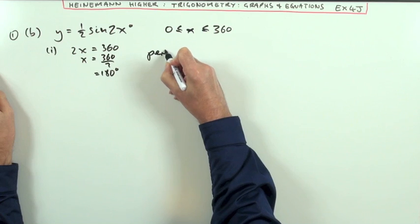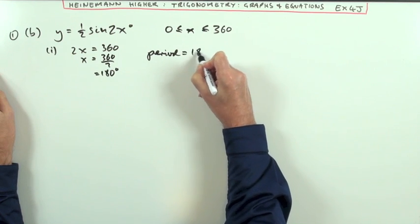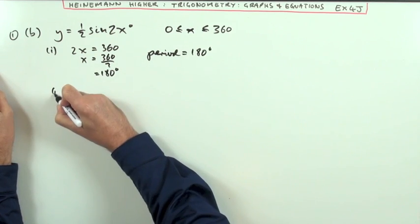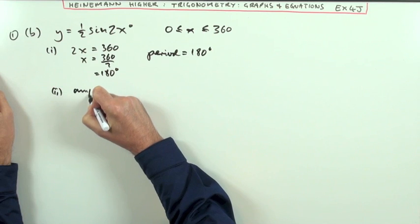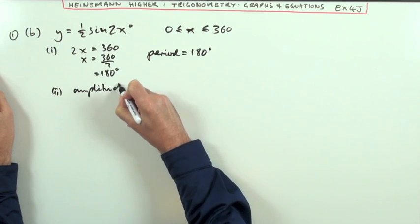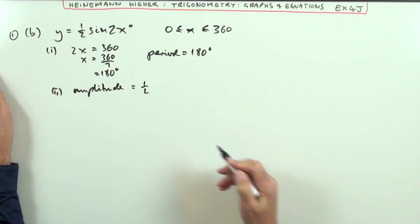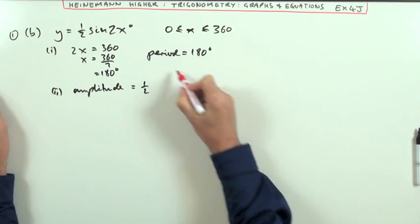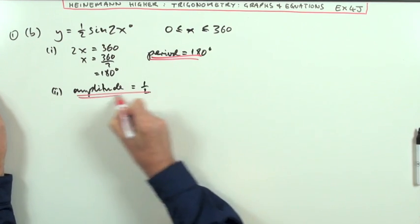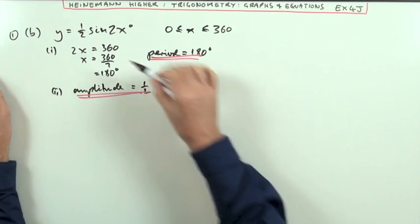Secondly, the amplitude. Well it's easy, it takes no calculation. It's staring you in the face there—that half that's multiplying it. So the amplitude is a half. It only goes up and down a half. It finishes at 180 and there's no vertical shifts and no horizontal shifts.